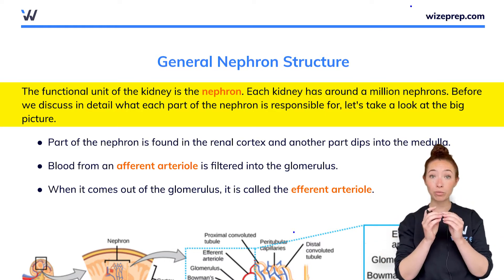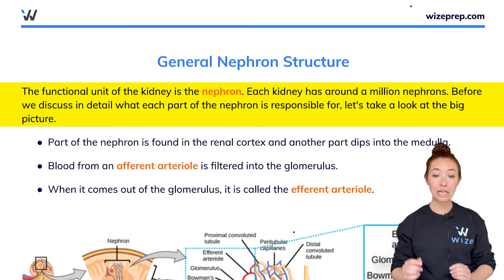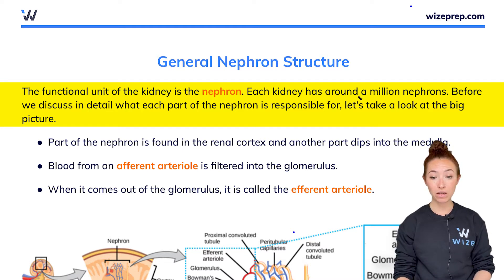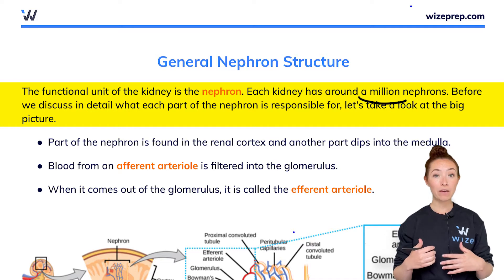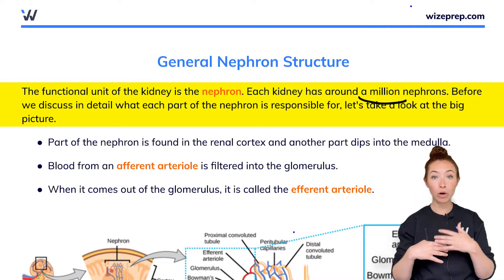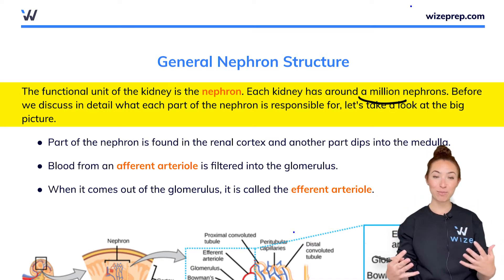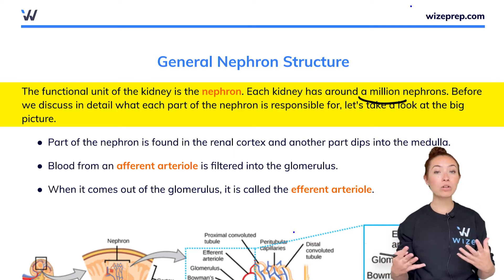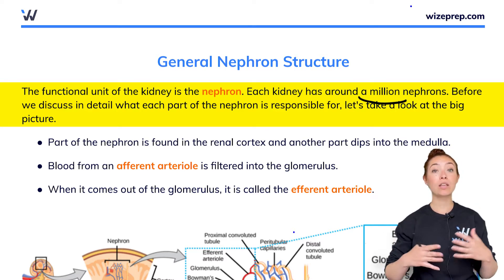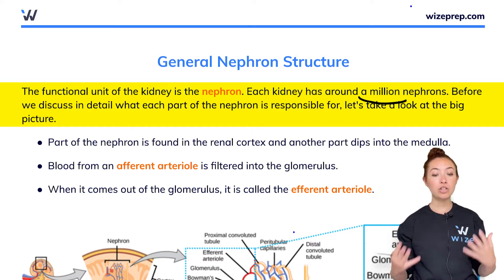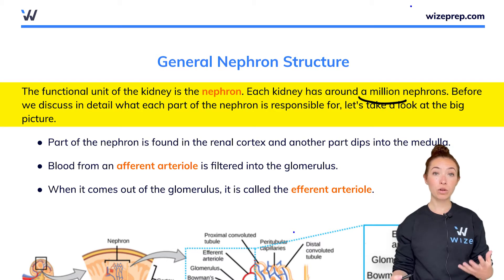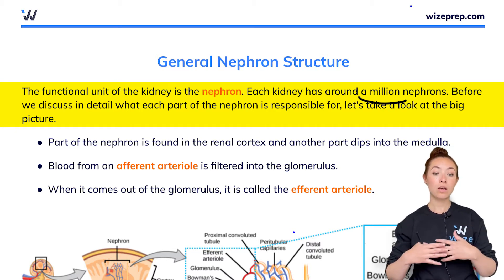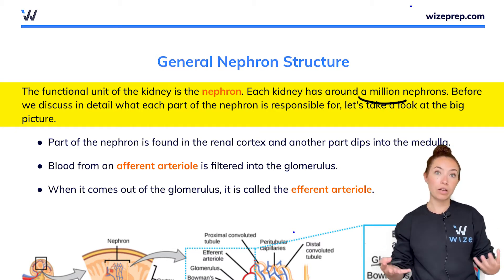The nephrons are really tiny, and each kidney has around a million nephrons. Before we dive into the different parts of the nephron — all of which you are expected to know for the MCAT — it's important to take a look at the big picture so you can have a general idea of where these nephrons are located and how they relate to the entire kidney itself.